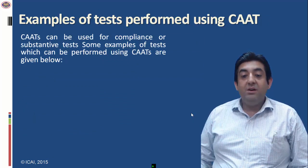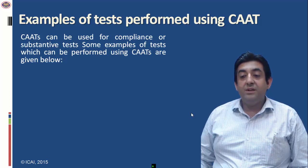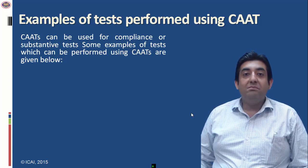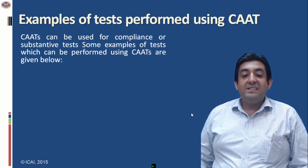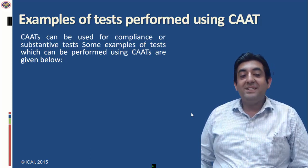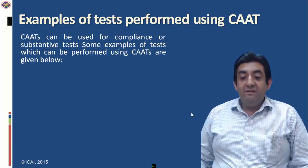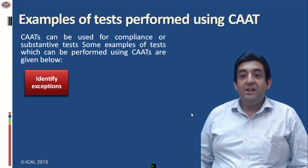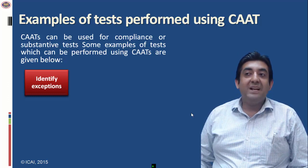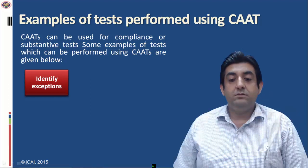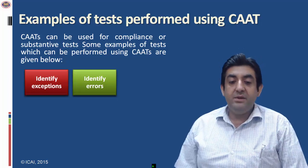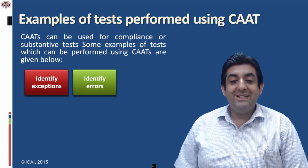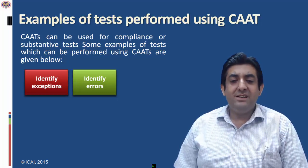Next is examples of tests performed using CAAT software. CAAT software can be used for compliance and substantive tests — compliance means as per the standard, and substantive means as per the evidence. Examples of tests which can be performed using CAAT software are: first, identify exceptions based on some criteria like cash transactions. Second, identify errors — meaning identify data which is inconsistent or erroneous; for example, identifying an account number which is not numeric.